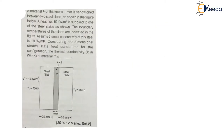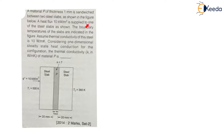So let us understand the question. A material P of thickness 1 mm is sandwiched between two steel slabs as shown in the figure. There is one steel slab on the left side and another on the right side, and between these two steel slabs material P with thermal conductivity k is sandwiched. A heat flux of 10 kilowatt per meter square is supplied to one end of the steel slab as shown.